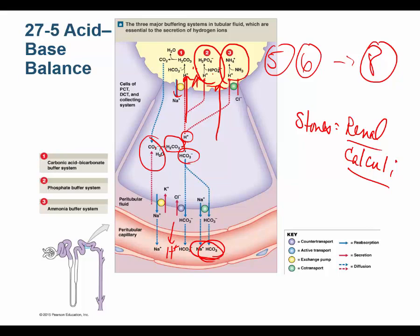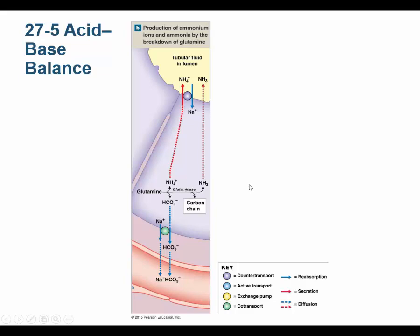The ammonia buffer system comes from deaminating an amino acid — an amino acid has the amine group, so I deaminate it and now I have ammonia. Ammonia plus a proton gives you ammonium, and I can urinate out that ammonium.